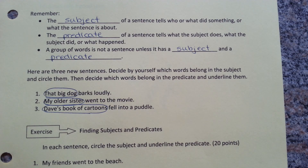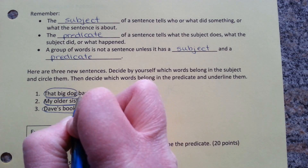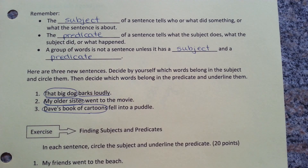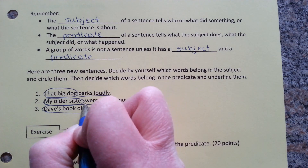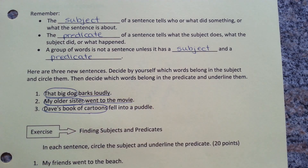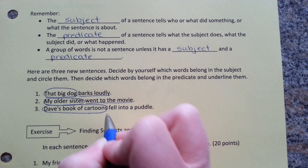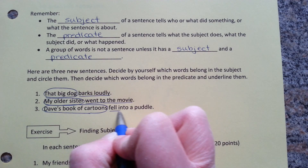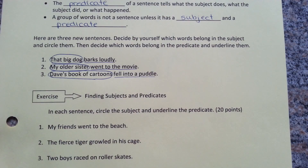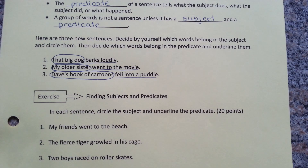Let's go back and do the predicates. Barks loudly should be underlined in number one. Number two: went to the movie is the predicate. And number three: fell into a puddle. Now you're ready to find subjects and predicates on your own on page nine of this assignment.